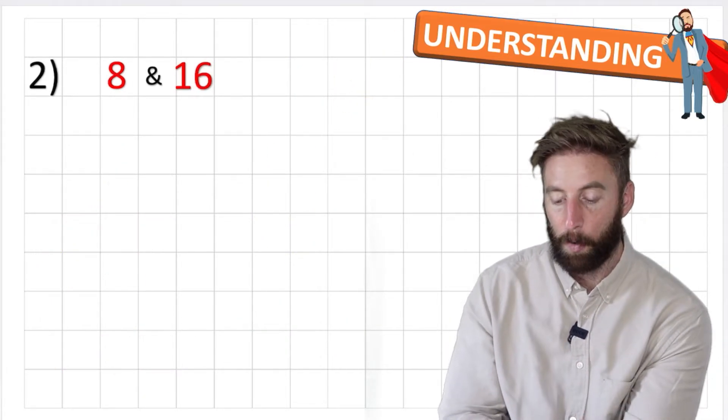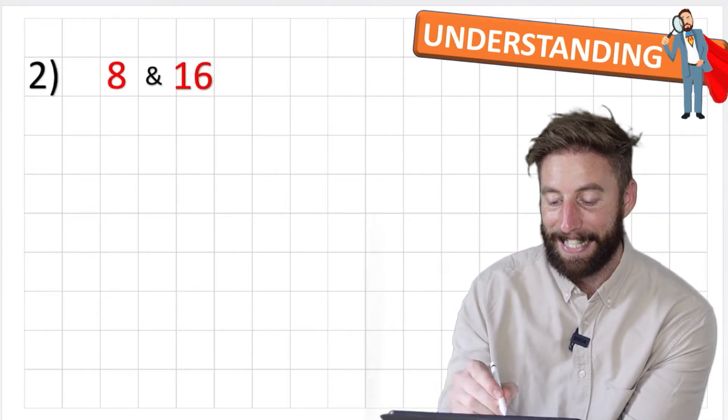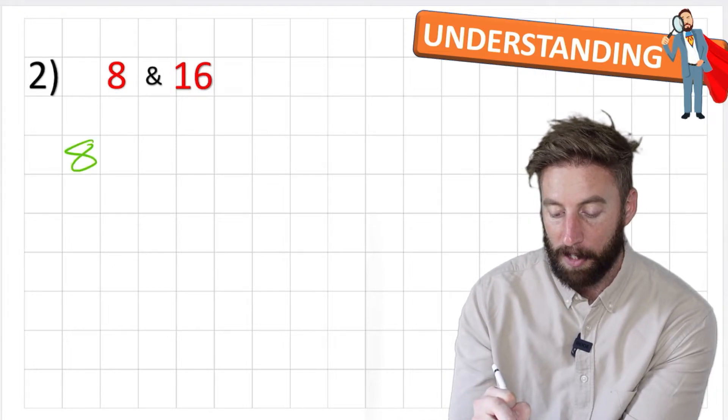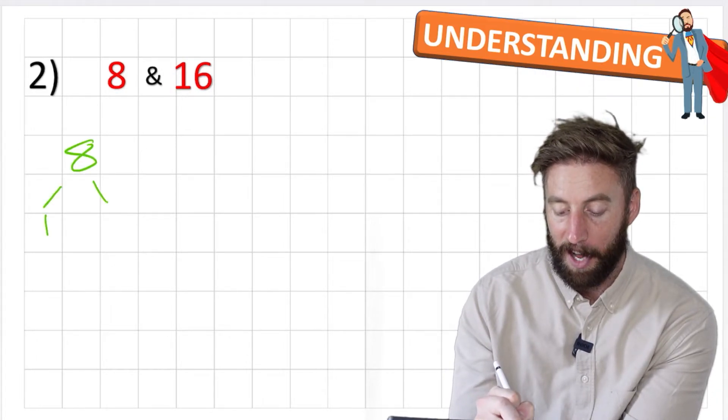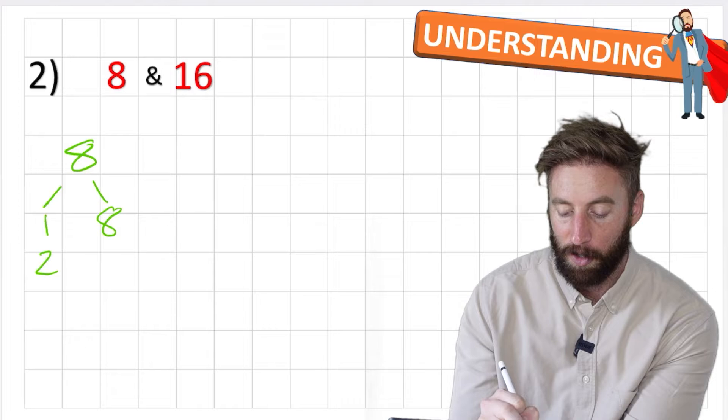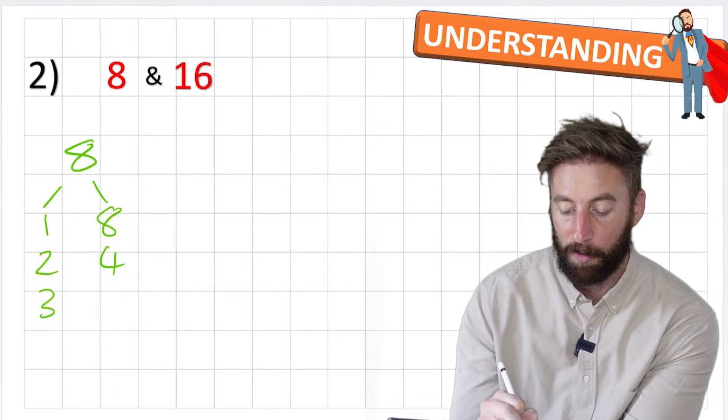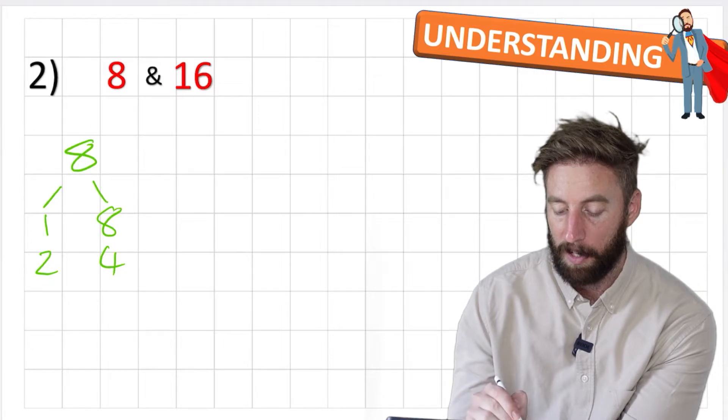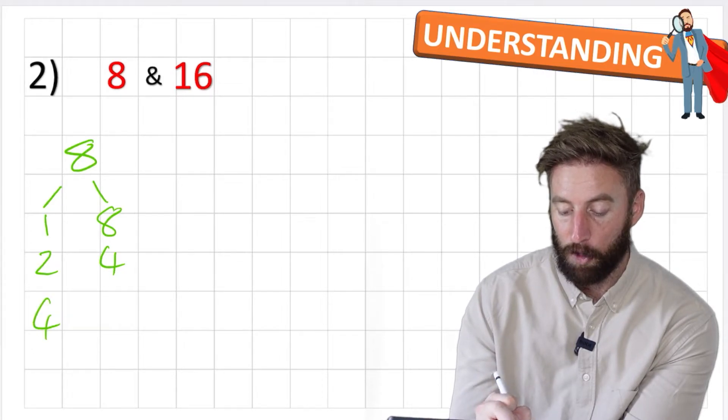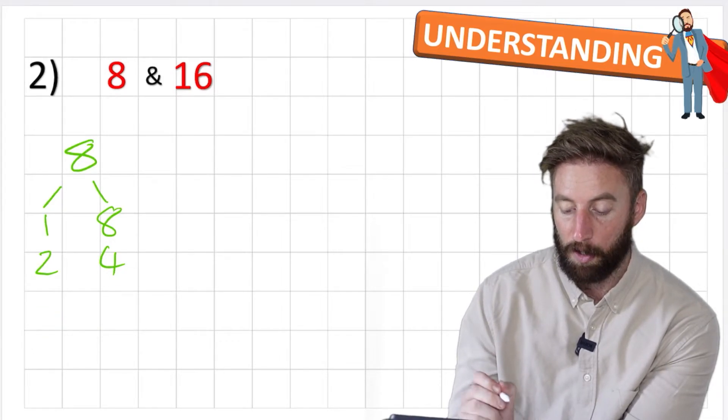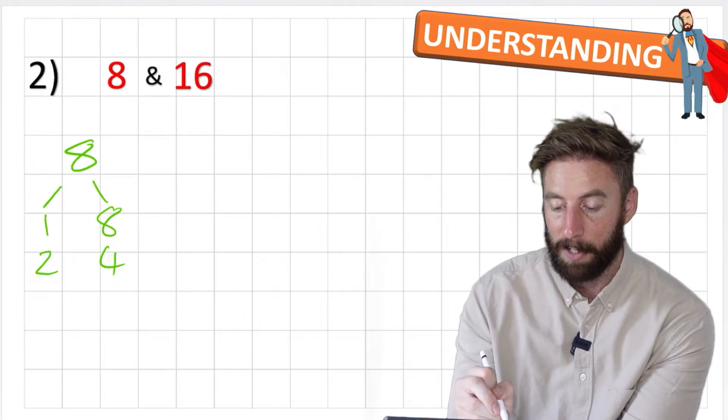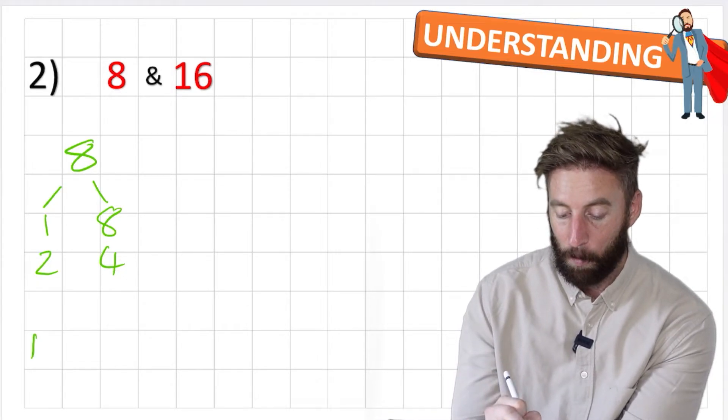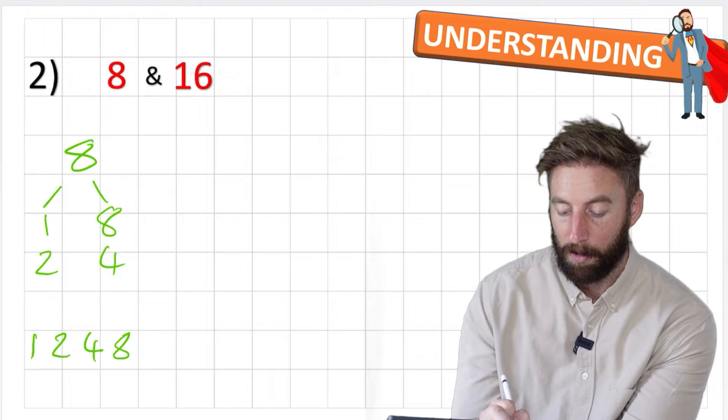Awesome, let's have a look at another question. Let's have a look at eight and sixteen. So first of all let's look for my factors of eight. I have one and eight, two and four. Is there a three? Nope, no three. And if I try and do another four I'm just repeating myself so I don't need to do that either. So here are my factors of eight: one, two, four and eight.